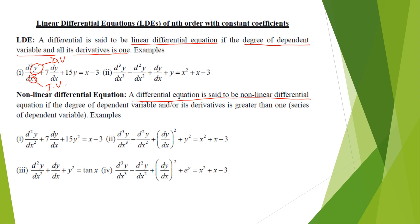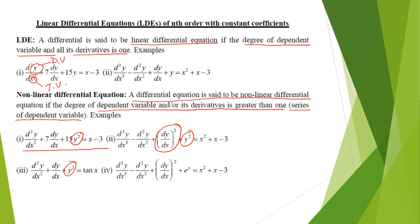A differential equation is said to be nonlinear if the degree of the dependent variable or its derivative is greater than 1, or if a series expansion of the dependent variable term exists. For example, y² makes it nonlinear. In the fourth case, e to the power y is nonlinear because its series expansion 1 + y + y²/2! + … contains degree greater than 1.